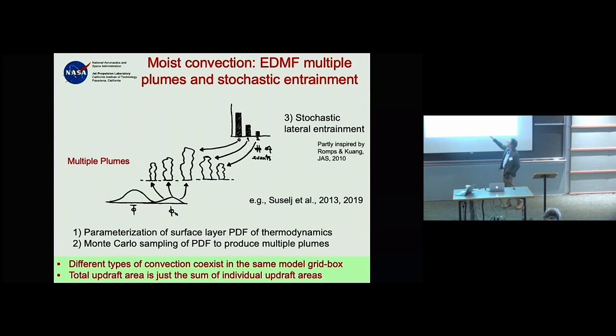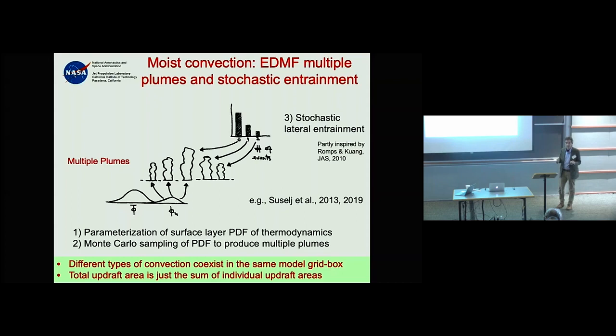We start by sampling the surface-layer properties and vertical velocities. If a particular plume is already fairly energetic from the beginning it will tend to go further; this happens alongside the stochastic entrainment parameterization.